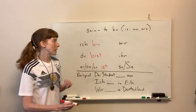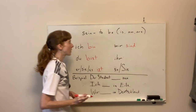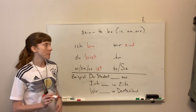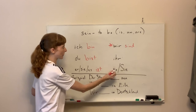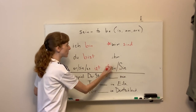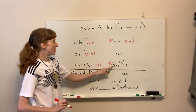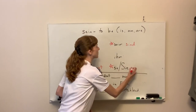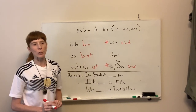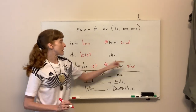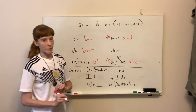Wir sind — we are. There is a pattern with German verbs, always and forever: wir and sie and big Sie will always be the same. So if we know that wir is sind, then sie and Sie also have to be sind. Wir sind — we are. Sie sind — they are. Sie sind — you polite — you are.